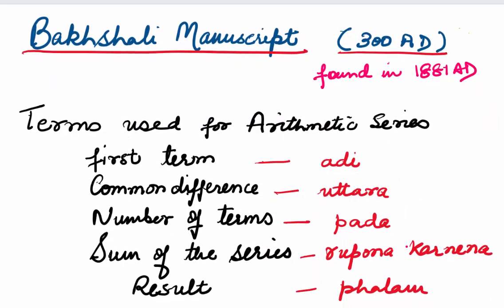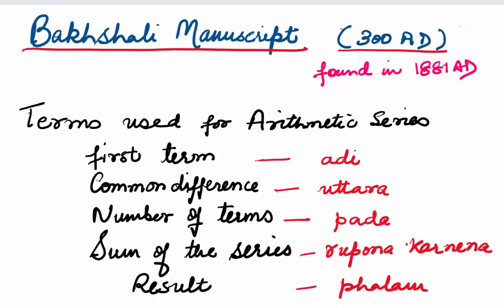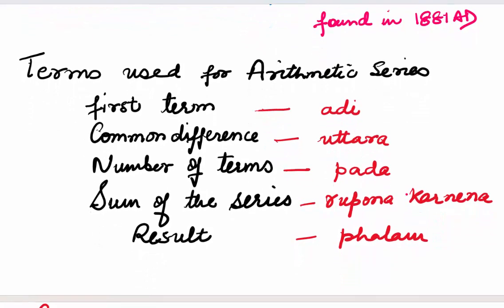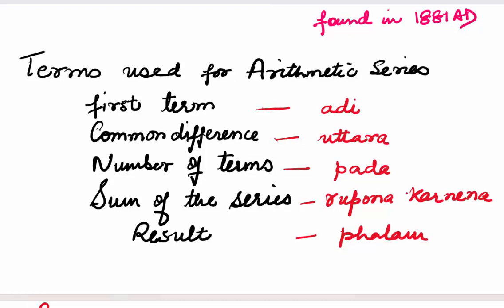If you come to the later period, the Bakshali manuscript was found in 1881 AD, discovered in a village near Bakshali, and so it's called the Bakshali manuscript. It's dated to 300 AD. There, a lot of beautiful examples on arithmetic series are given. The first term was called 'Aadi', the common difference 'Uttara', number of terms 'Pada' or 'Pad', the sum of series referred to as 'Rupona' or 'Karnena', and for result they used the word 'Phal' or 'Phalam'.